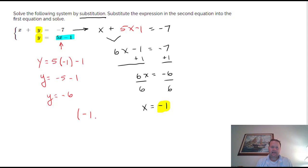So the solution to this particular system is an ordered pair. If I were to graph these two equations, they would cross at left 1 and down 6 units, or x is negative 1 and y equals negative 6.